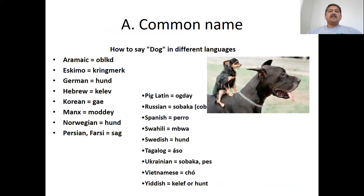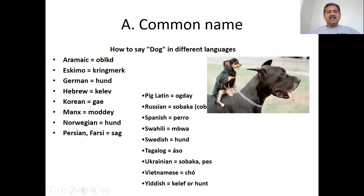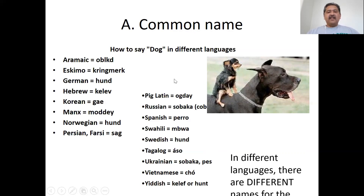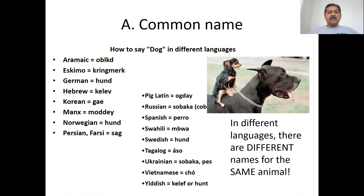If we take a look at the dog, as you can see in this photo, there are all kinds of different dogs, but they're all dogs. But in different languages, we call them different things. In German, we call it a Hund. In Spanish, that little one is Perrito. It might be Chó in Vietnamese. They all have different names — one species, different names in different languages, for the same animal.